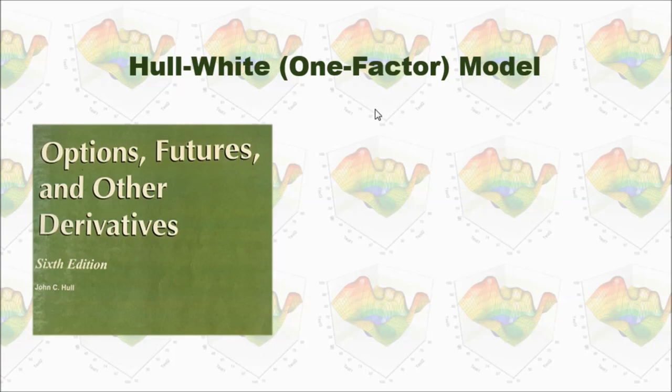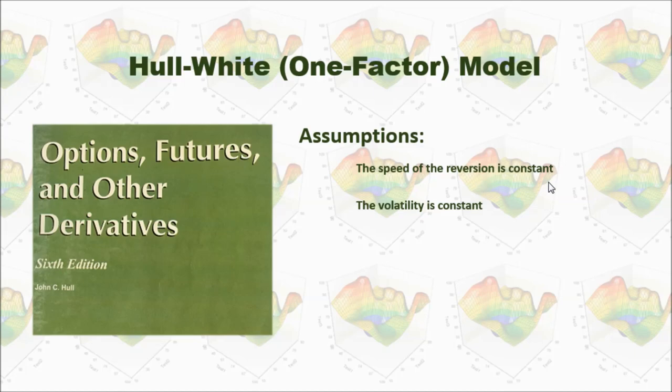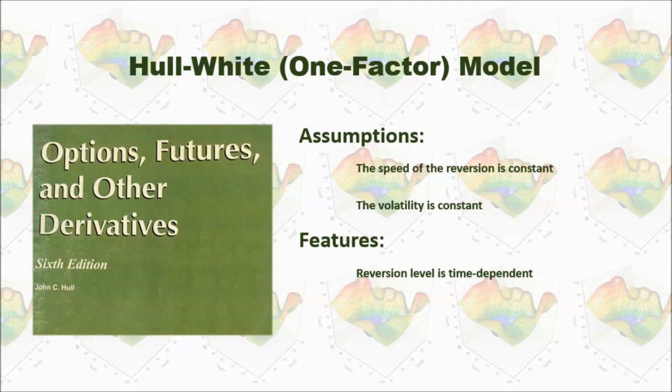In the Hull-White one-factor model, I got the formula from a book by Jiang Ho. There are several assumptions in this model. First, the speed of reversion is constant and the volatility is constant — the same as the Vasicek model. However, in the Hull-White model, the reversion level is time-dependent, which is different from the Vasicek model where the reversion level is constant.